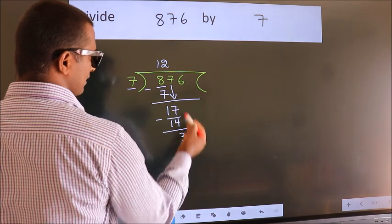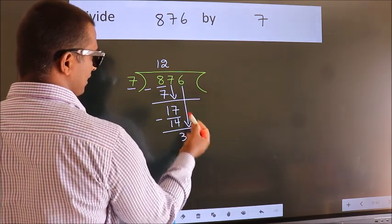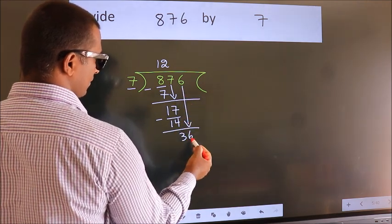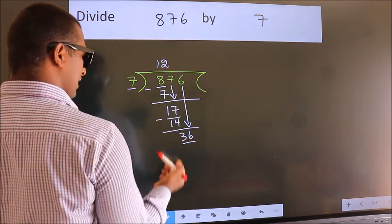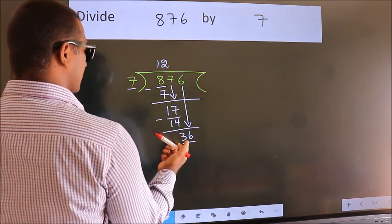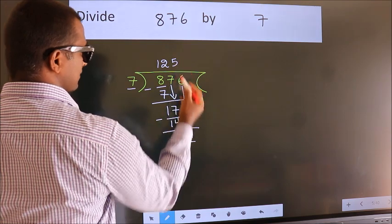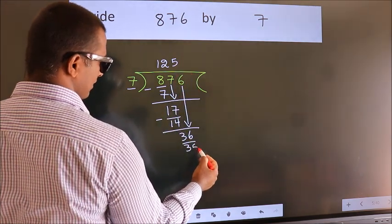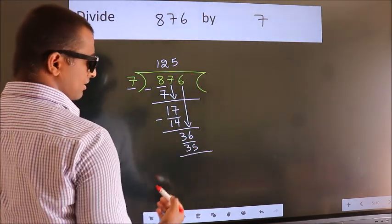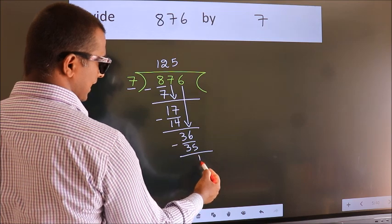After this, bring down the next number. So 6 down. So 36. A number close to 36 in the 7 table is 7 fives is 35. Now we subtract. We get 1.